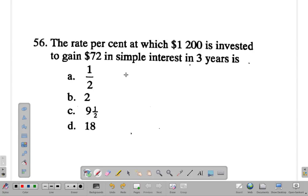You remember the formula: simple interest equals principal times rate times time over 100. So the simple interest is 72.